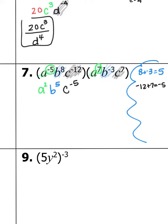Once you've done the rule, reevaluate: do you have a negative exponent anywhere? You do right here with c to the negative fifth, so we flip that one and it goes down to the bottom. Everything else stays on top. So a squared, b to the fifth, all over c to the fifth would be your answer.